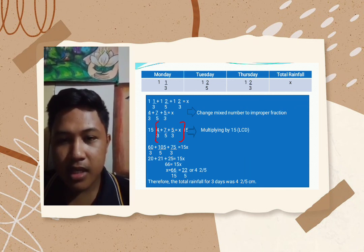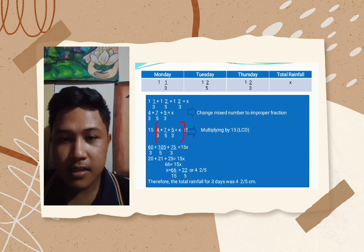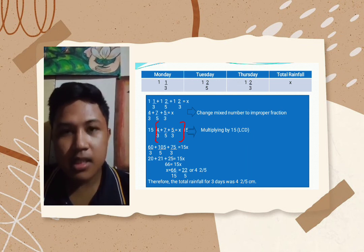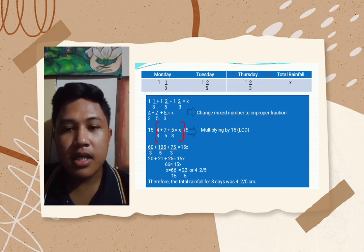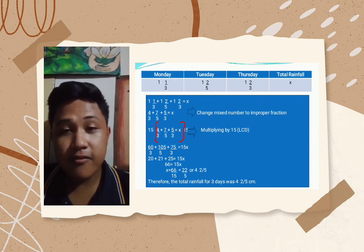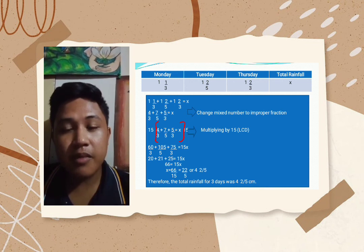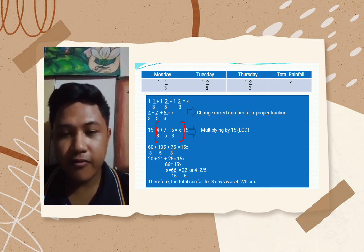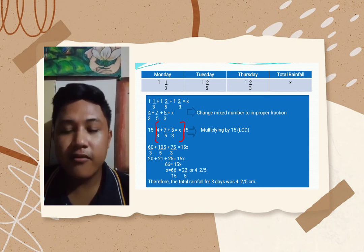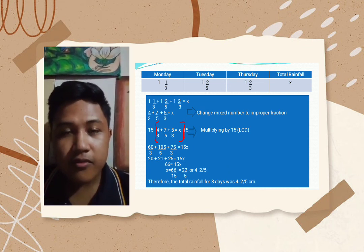We copy the LCD 15 as our denominator. Now we add 20 plus 21 plus 25 equals 66 over 15. Simplifying, the answer is 4 and 2 fifths. We can verify by converting to improper fraction: 5 times 4 plus 2 equals 22, giving us 22 over 5. Therefore, the total rainfall for 3 days was 4 and 2 fifths centimeters.